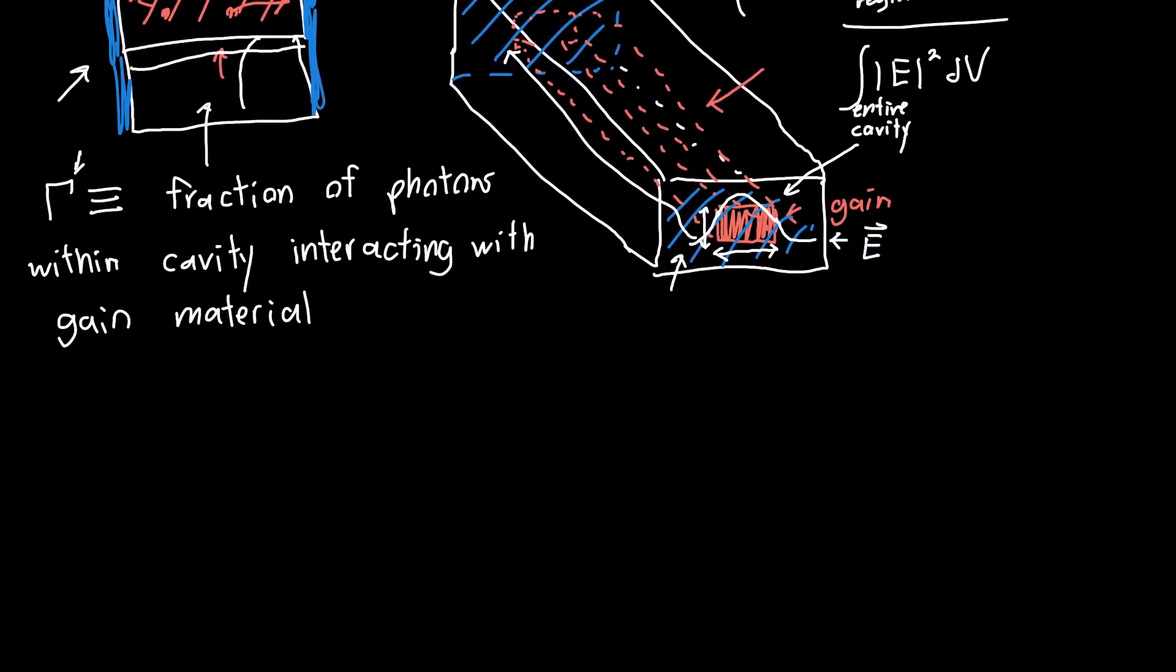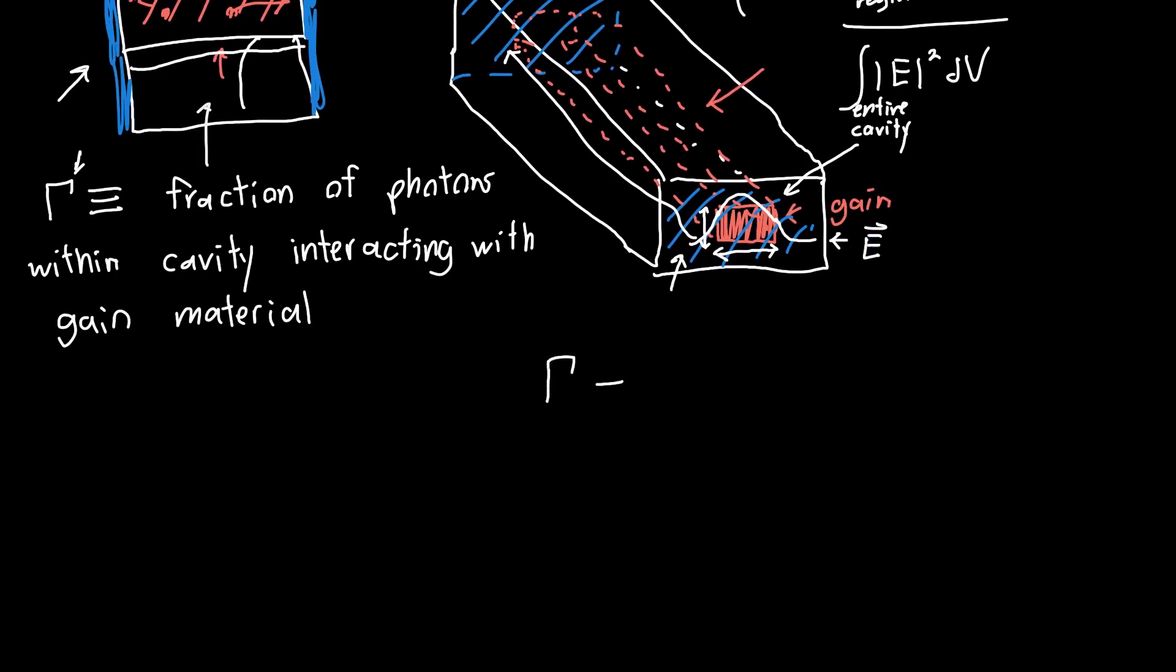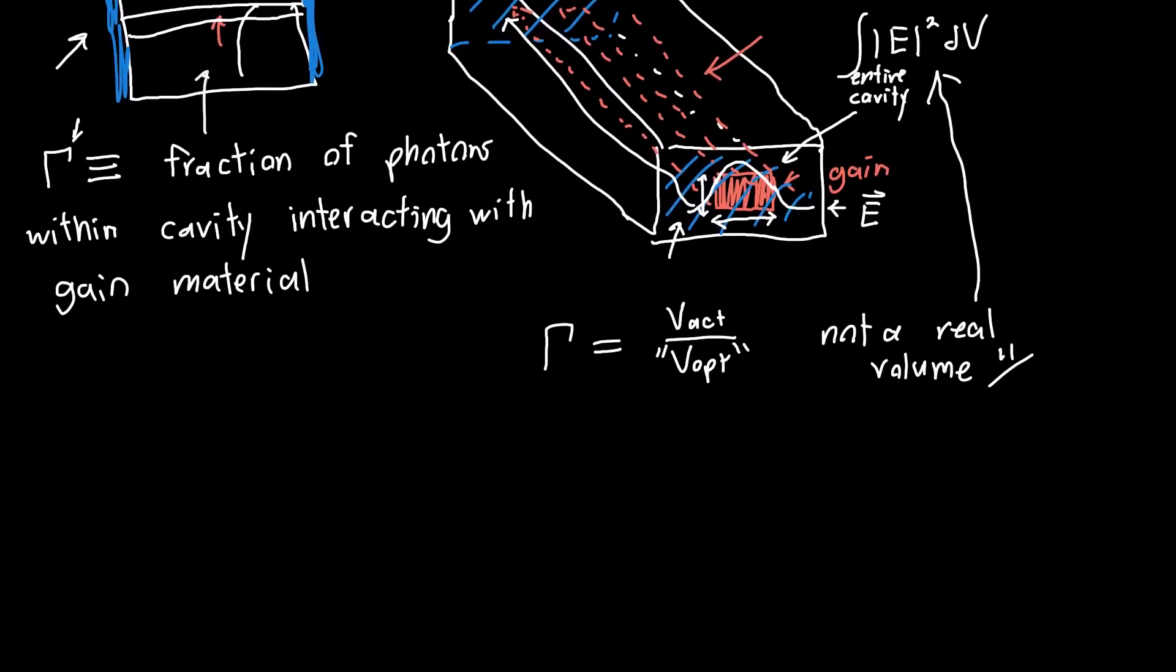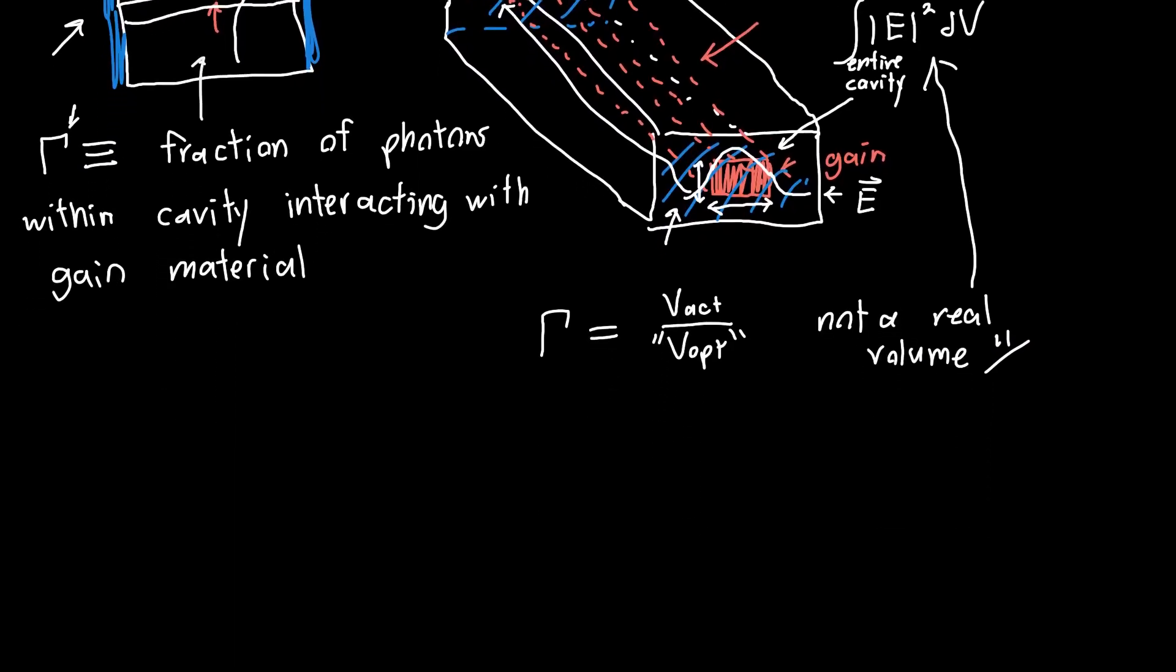Now, you might see gamma written different ways in the literature. So one common way of writing it is as the active region volume divided by the optical volume. And this is sort of, I put this in quotations because it's not a real volume. It can only be defined in terms of this integral, which we defined up here. So if you integrate the electric field and divide them by each other, then you can sort of get an effective optical volume.